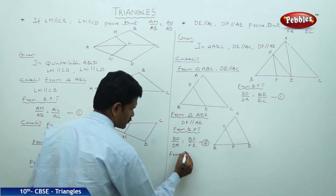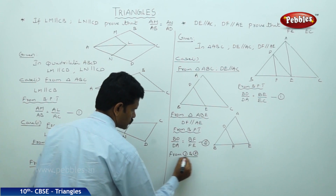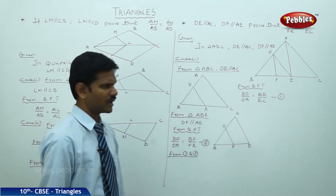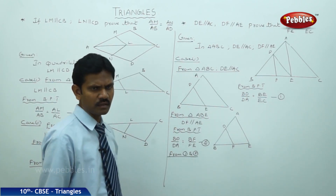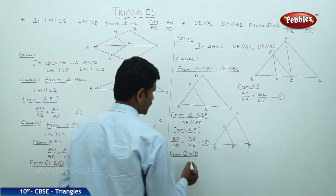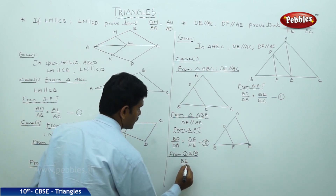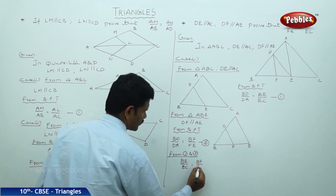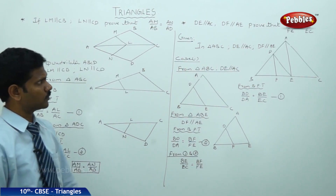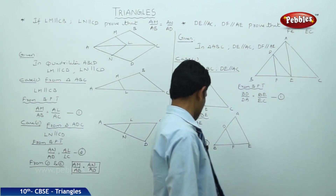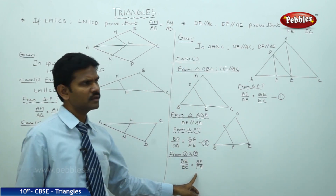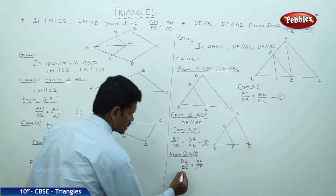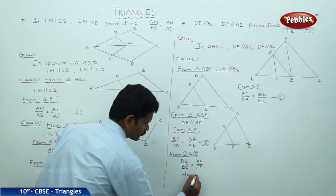From equations 1 and 2, the LHS BD/DA is equal in both. Therefore, equating the RHS: BE/EC = BF/FE. Hence proved.